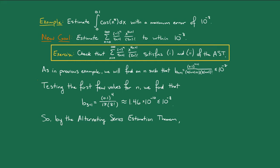So, by the Alternating Series Estimation Theorem, R₃, the error in approximating the sum of the series by the third partial sum, is less than or equal to 10⁻⁸.